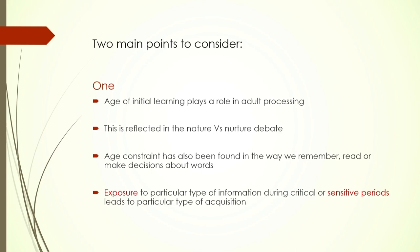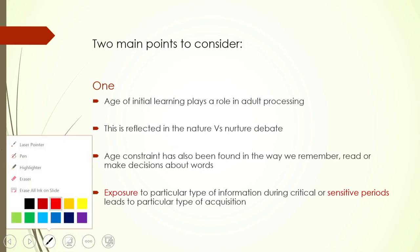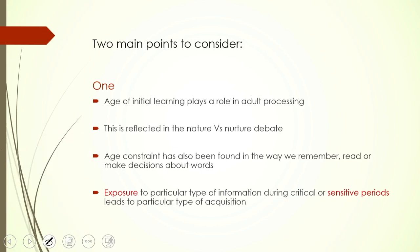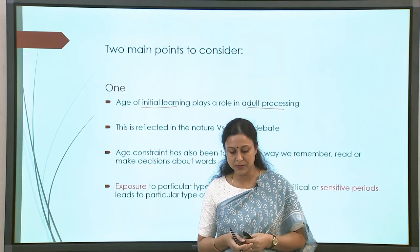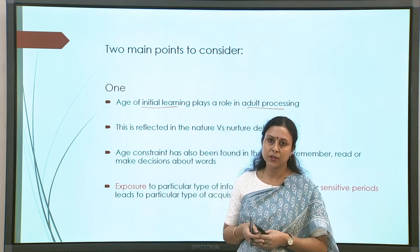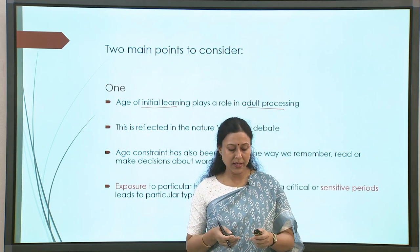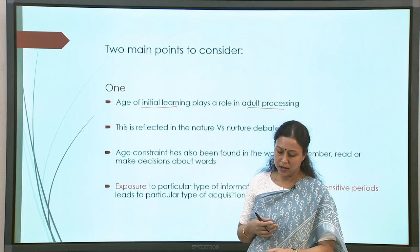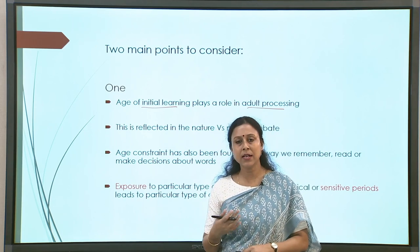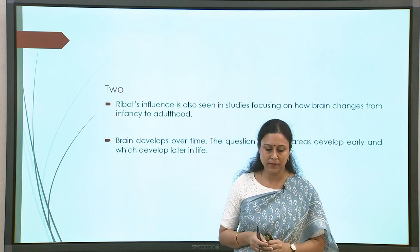One is that age of initial learning plays a very important role in adult processing — how and what we acquired in our childhood plays a very important role in adulthood. The kind of exposure one might have or not have in early childhood will shape the person as they are. The kind of training and exposure a person has had in the initial stages of life will reflect in the processing of any kind of information, language included, later in life.